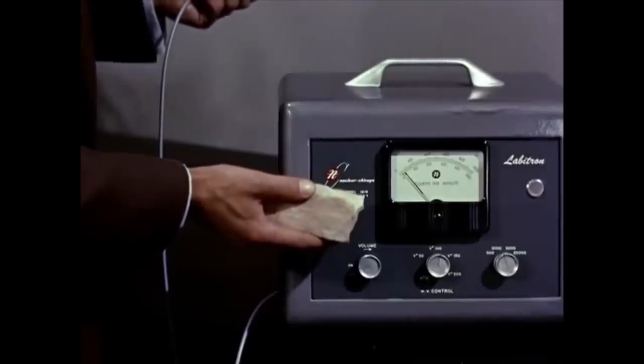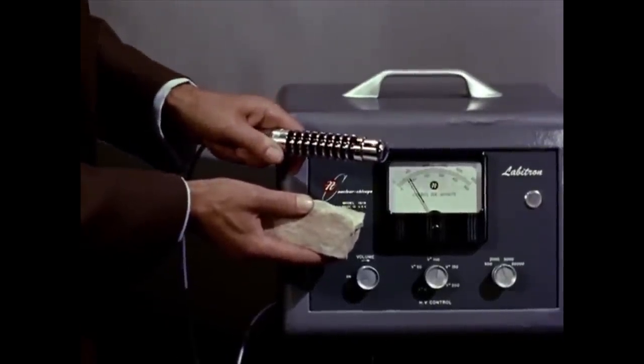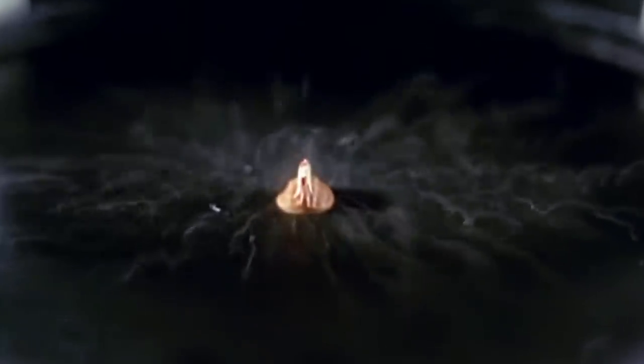The Geiger counter detects their presence. A cloud chamber makes these rays visible to the naked eye. Each new vapor trail shows that another atom has thrown off a fragment from its nucleus.